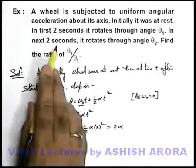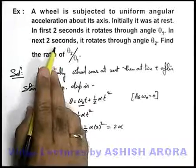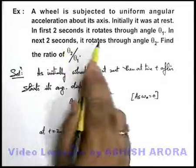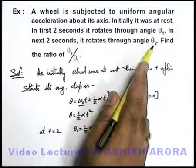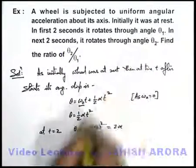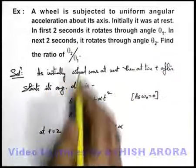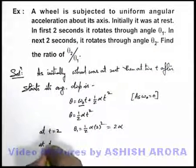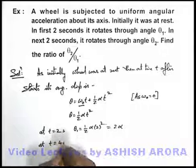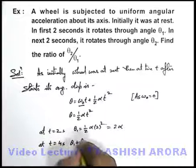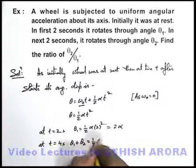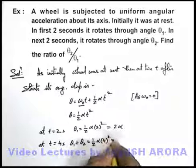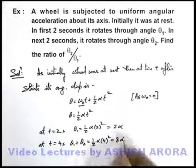In the next 2 seconds, that means total 4 seconds from start, it rotates through theta 2 angle. At t equals 4 seconds, theta 1 plus theta 2 equals half alpha into 4 square, which equals 8 alpha. Putting the value of theta 1, we get theta 2 equals 8 alpha minus 2 alpha, which is 6 alpha.